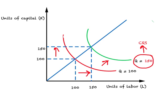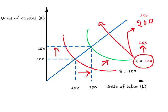Now suppose instead the green isoquant represented an output of 200. When you increase all inputs by 50 percent and output doubles, this must be a situation of increasing returns to scale, or IRS. Another possibility is that this isoquant may represent an output of 125. When you increase all inputs by 50 percent and output increases only by 25 percent, this must be a case of decreasing returns to scale, or DRS.